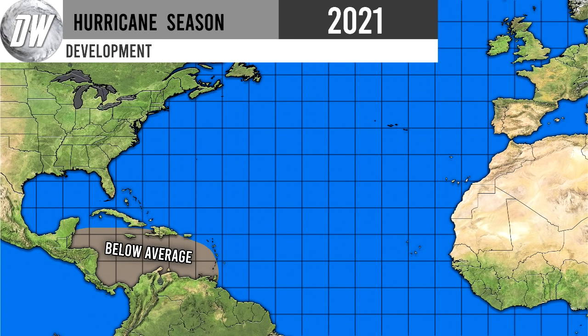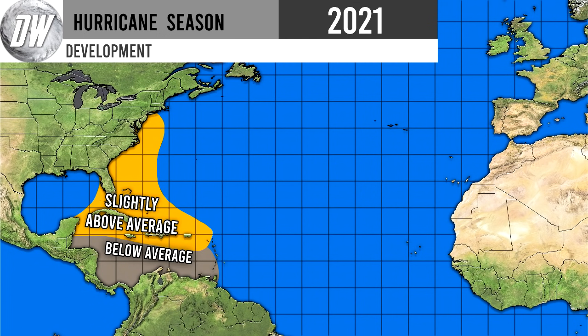Here is our development forecast. Going right off what I just said: below average development south of the Dominican Republic and Haiti, where wind shear tends to be higher, combined with below average sea surface temperature anomalies — those two things together mean I expect below average development for that region. We also have a slightly above average development region for the Caribbean and up the east coast as well, where storms should have a fairly easy time developing. Coming up: the rest of the development forecast, overall forecast, and storm count.